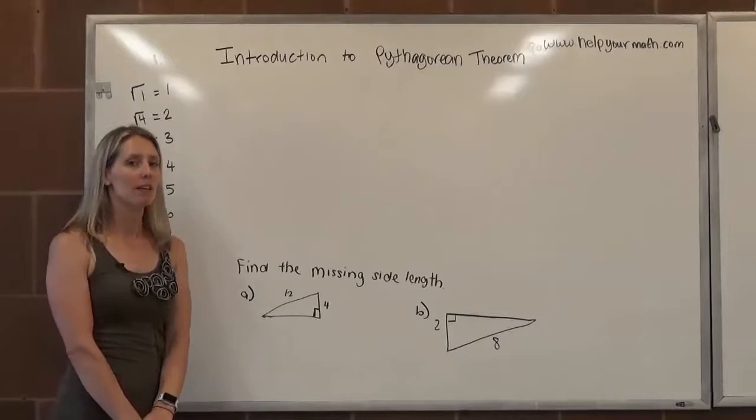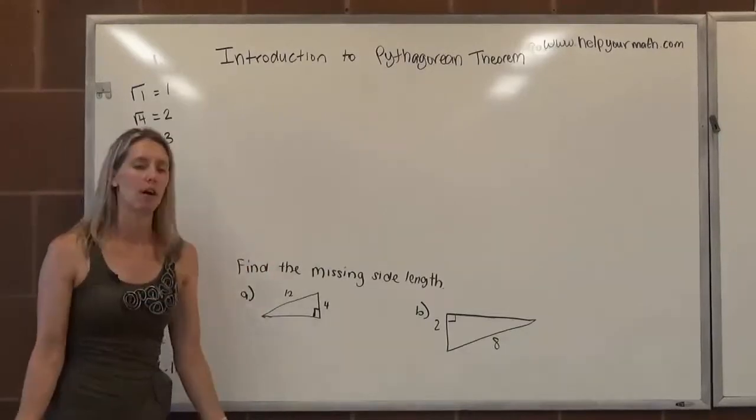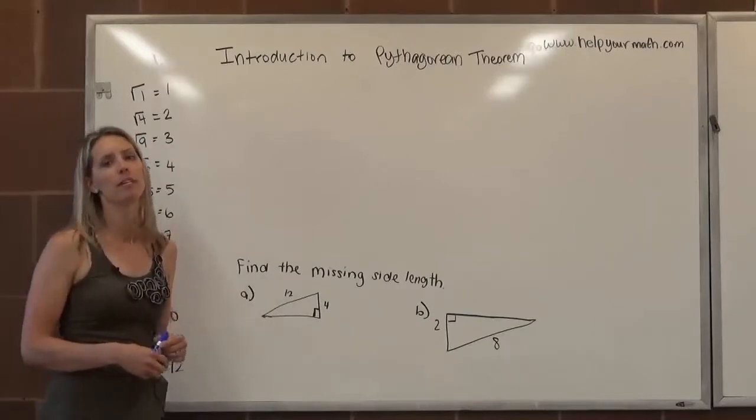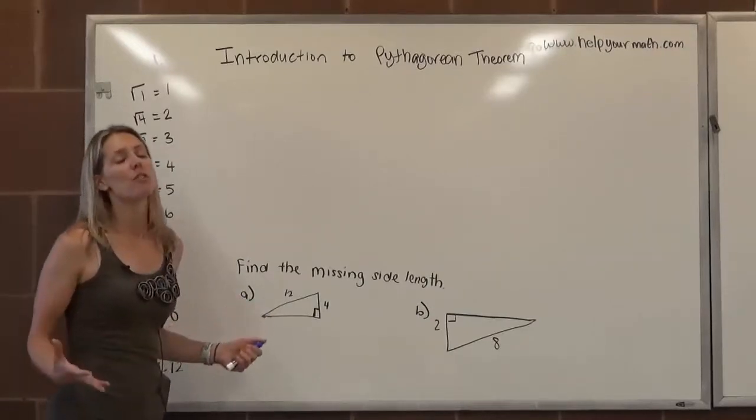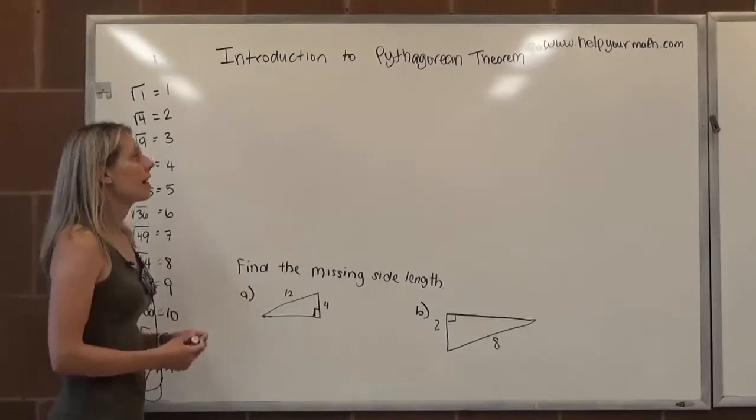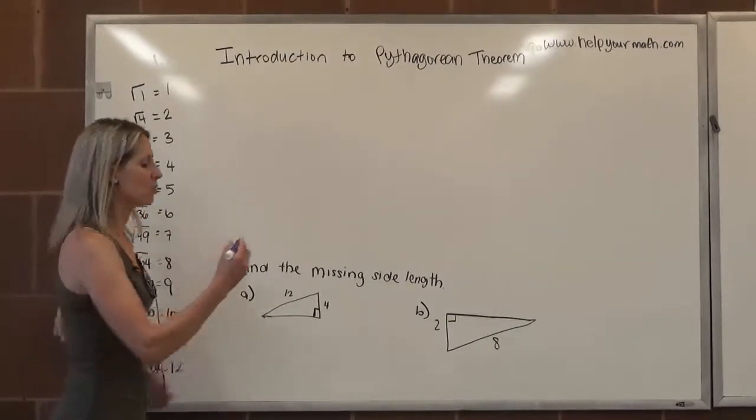The Pythagorean Theorem, that's the one thing that we always all remember and we will for the rest of our lives. That's the one that says a squared plus b squared equals c squared, which is great, but what are we talking about? What is a, b, and c? Well, it's talking about the sides of a right triangle.